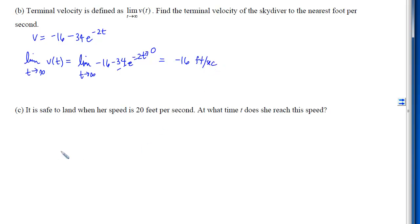With part c, it says it is safe to land when her speed is 20 feet per second. Let's remember that speed is the absolute value of the velocity. Our terminal velocity was -16 and our initial velocity was -50. Our velocity has been negative the entire time. So if we want the speed to be 20, that means the velocity is going to be -20.